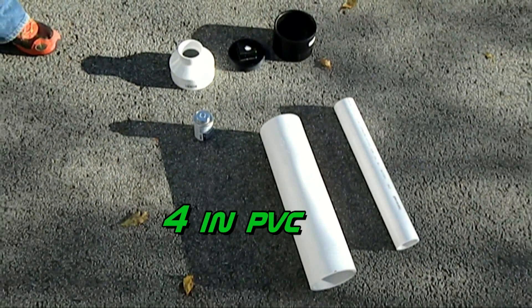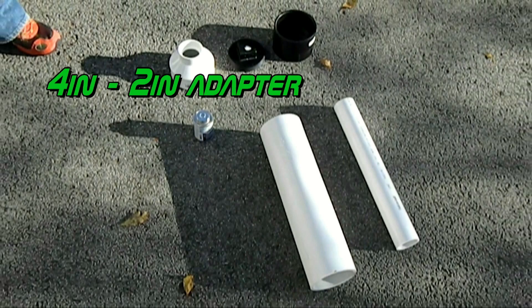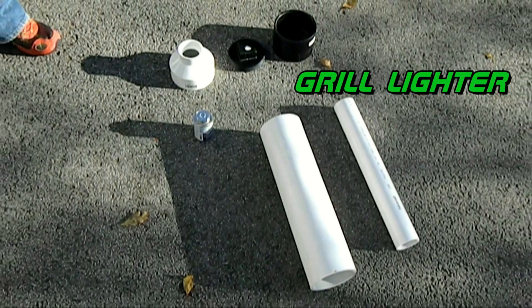To get started on your potato cannon, you're going to need 4 inch PVC, 2 inch PVC, PVC cement, 4 to 2 inch adapter, threaded coupling and cap, and a grill lighter.